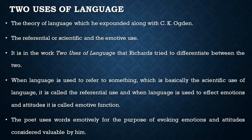When language is used to refer to something, which is basically the scientific use of language, it is called the referential use. When language is used to affect emotions and attitudes, it is called the emotive function. A statement may be used for the sake of reference, which may be verified as true or false — this is the scientific or referential use. But language may also be used for the sake of the effects in emotions and attitudes produced by the reference — this is the emotive or poetic use of language.